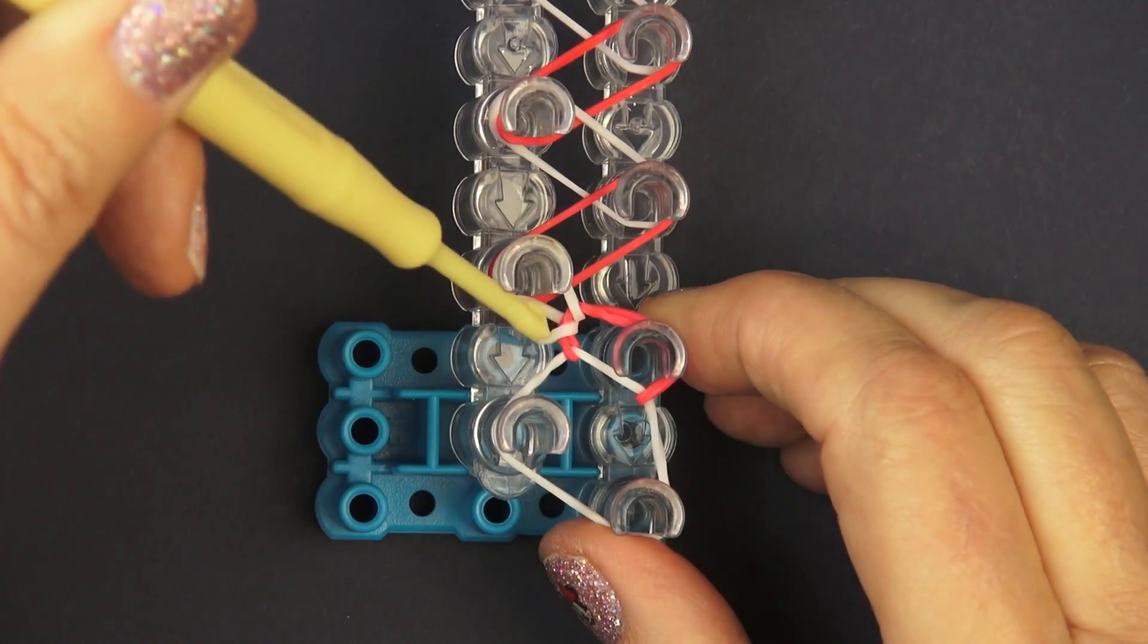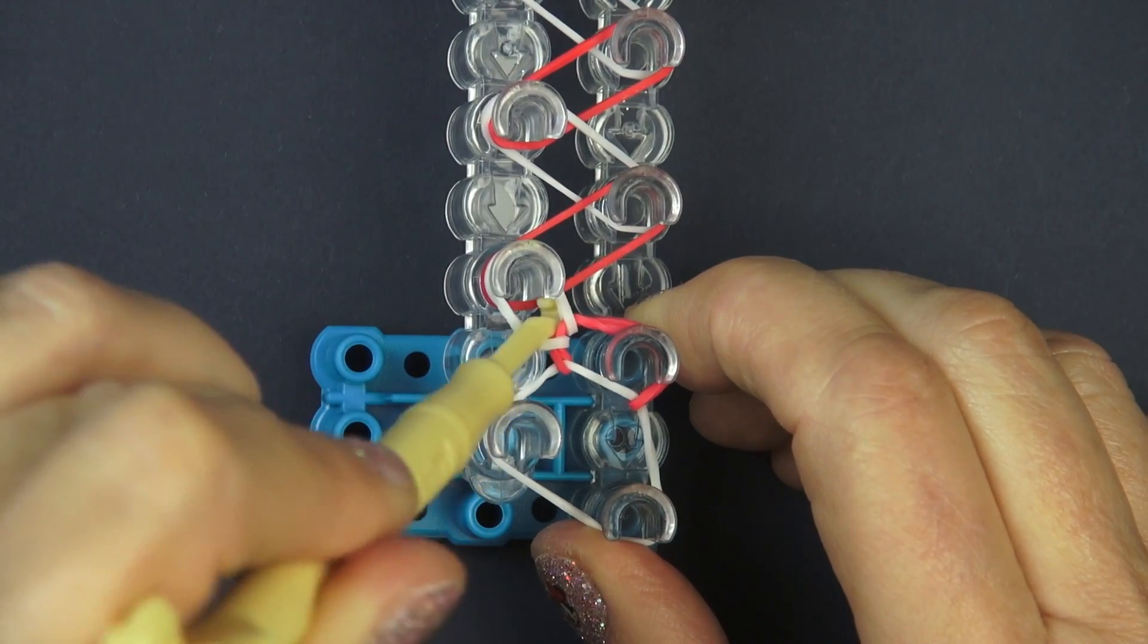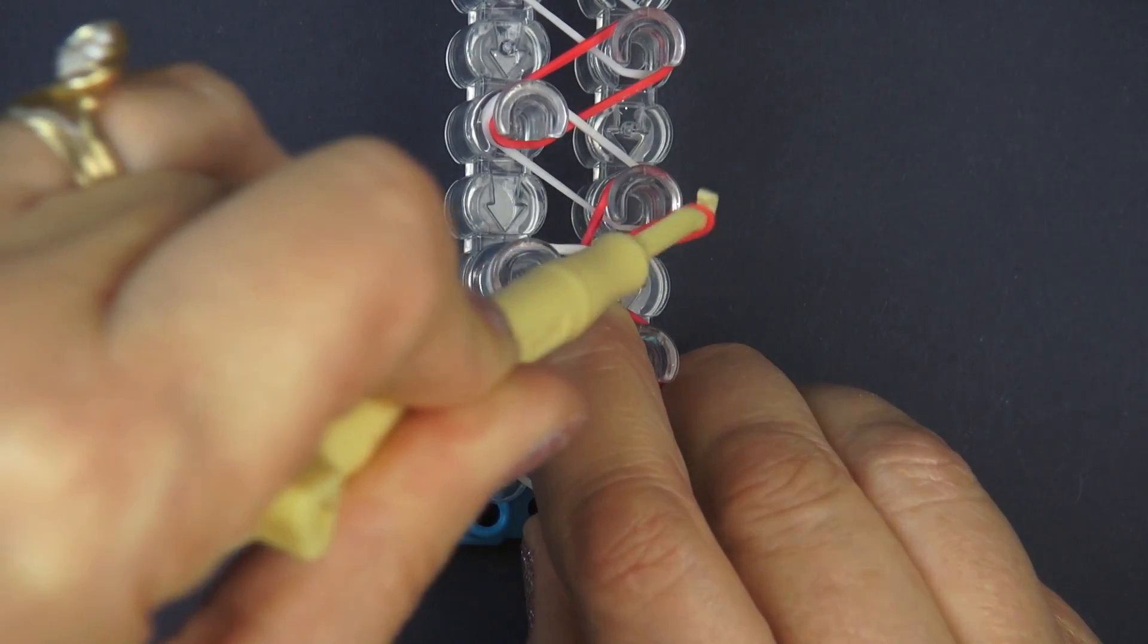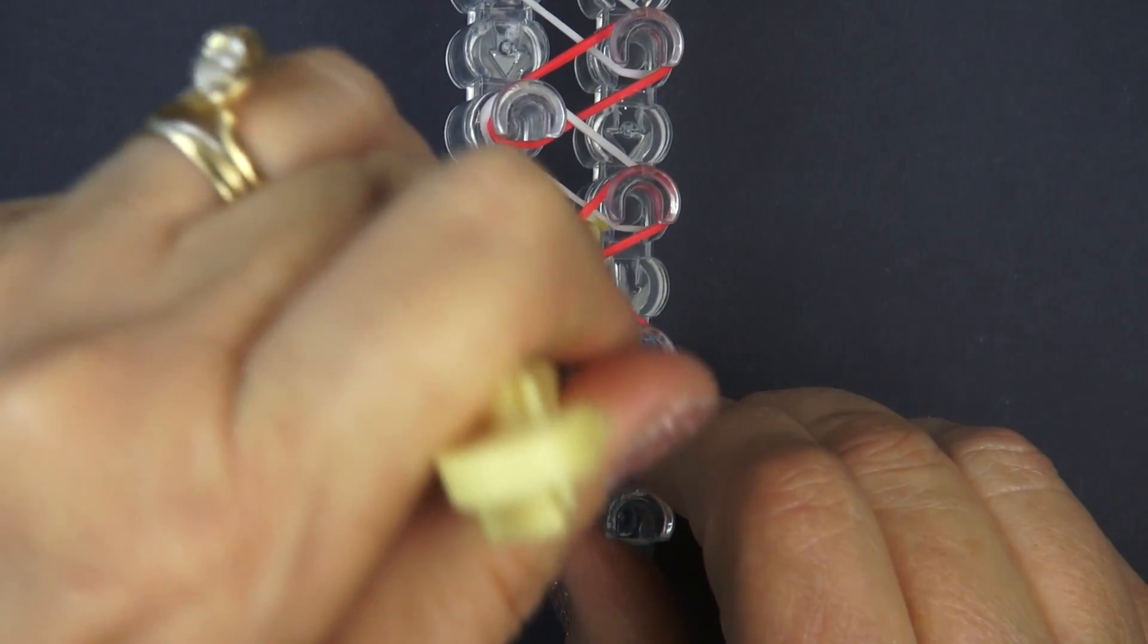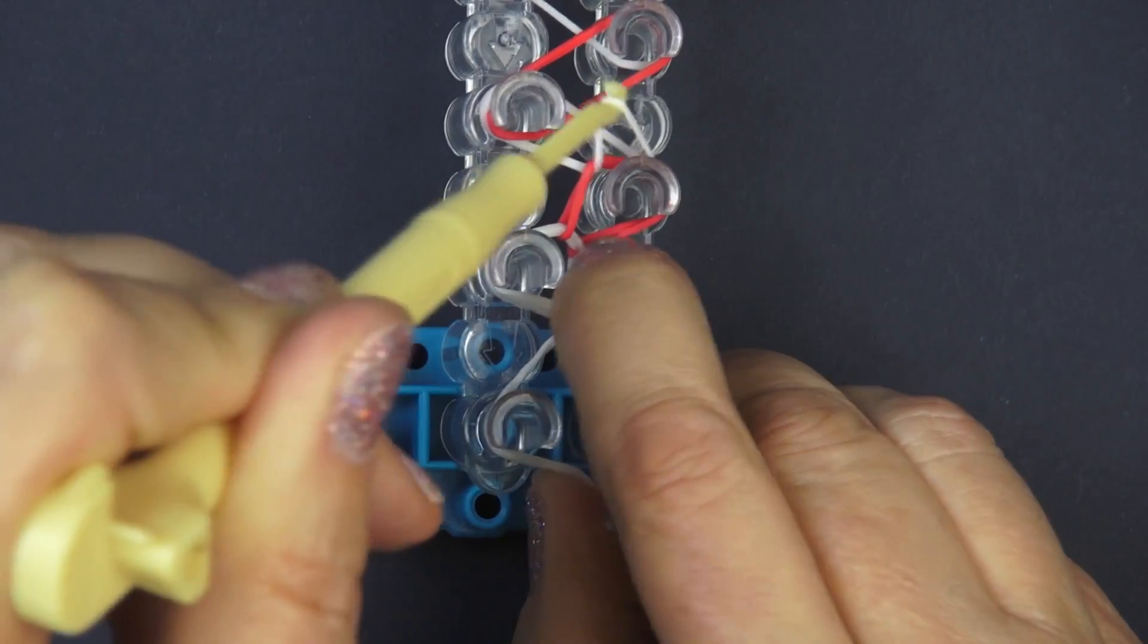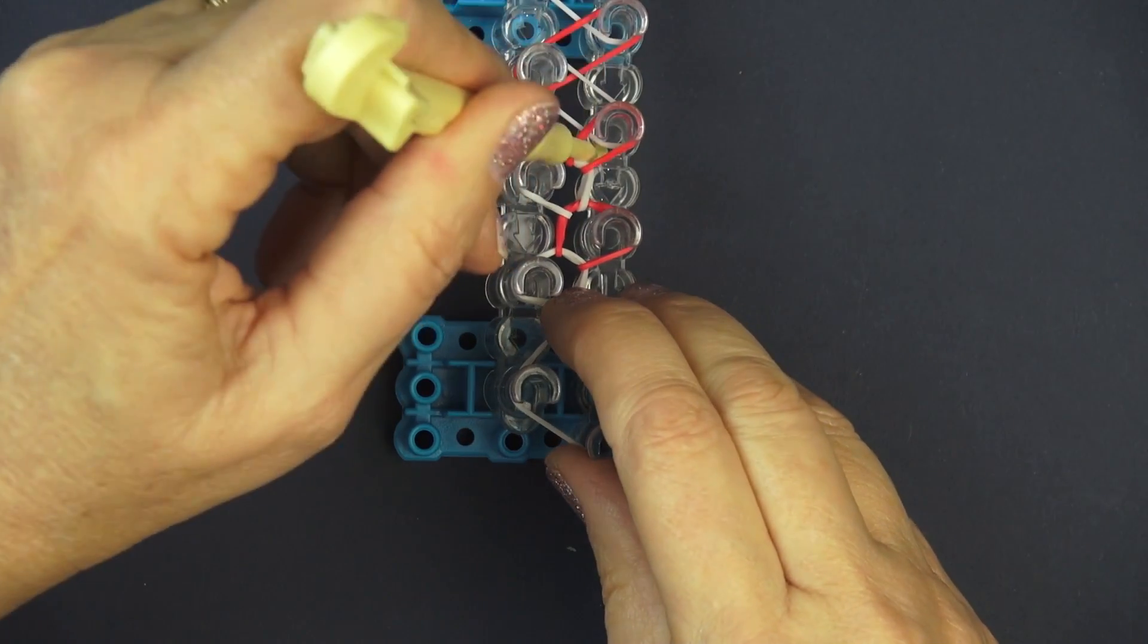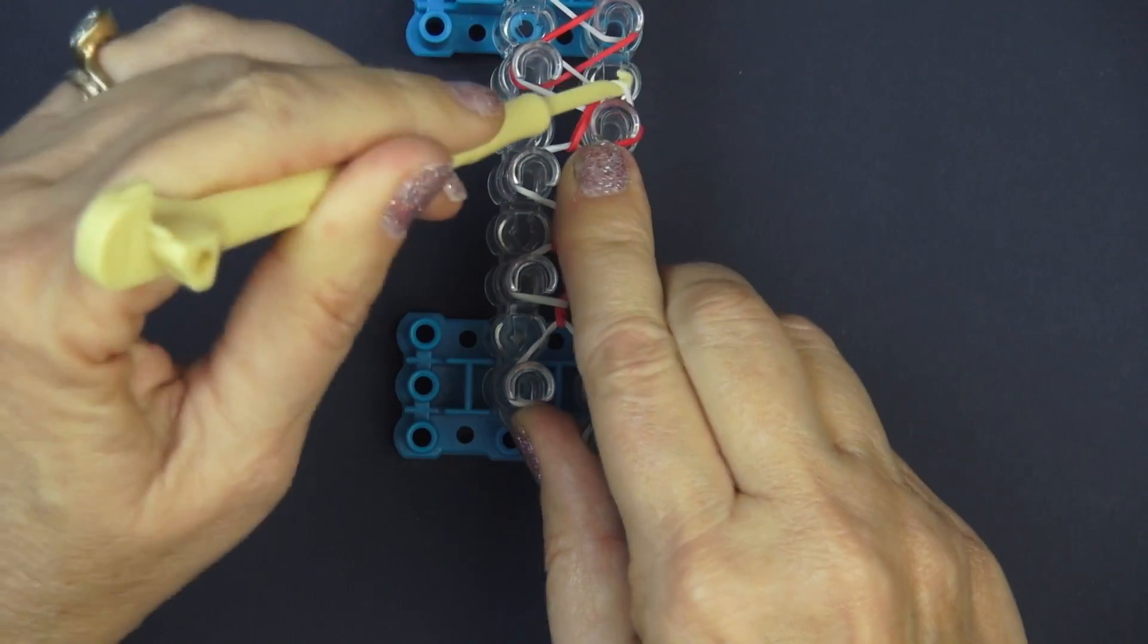Now it's time to pick up a red rubber band and you can use the hook to push the other rubber bands out of the way to get to the one that you want. It'll take some practice but you'll get it. Keep picking up the rubber bands just like we have for the looping, hold down, all the way to the end of the loom.